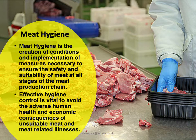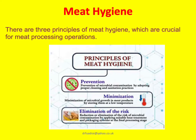When we talk about meat hygiene, there are three principles which are crucial for meat processing operations. The first is prevention — prevention of microbial contamination by adopting proper cleaning and sanitation practices. The second is minimization — minimization of microbial growth in meat products by storing them at a low temperature. The third principle is elimination — reduction or elimination of the risk of microbial contamination by applying suitable heat treatment and packaging systems at the final processing stage.